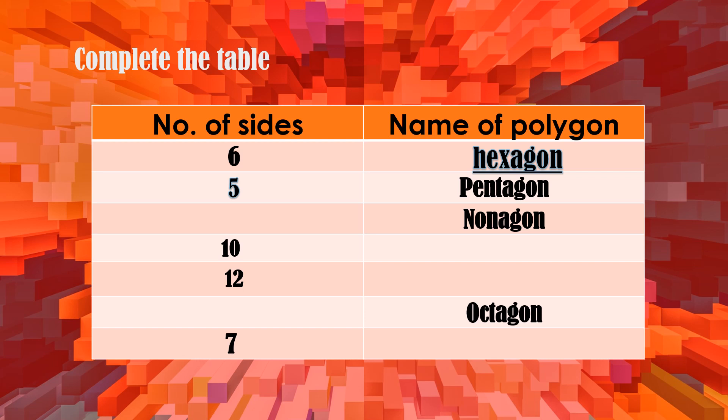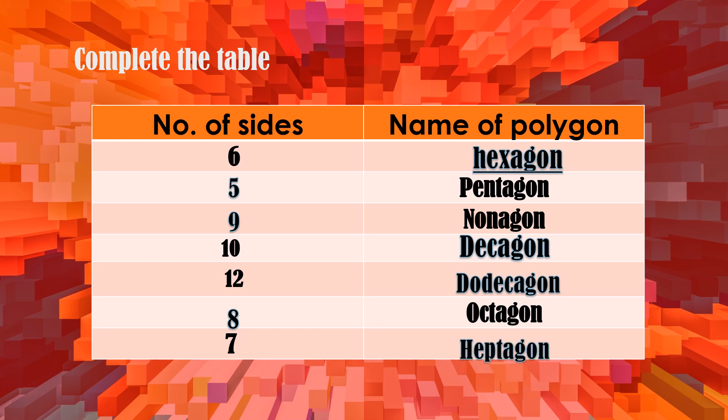How about a nonagon — how many sides does it have? It has nine sides. A shape with ten sides is called a decagon. How about twelve sides? And the shape with eight sides is called an octagon. How about seven sides? That is called a heptagon — very good.